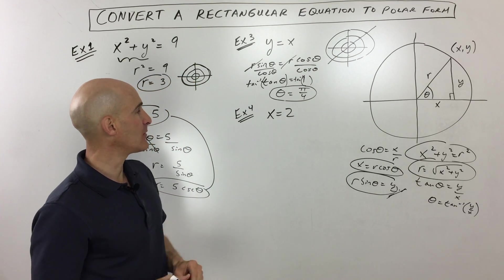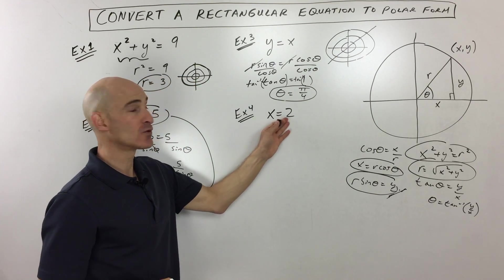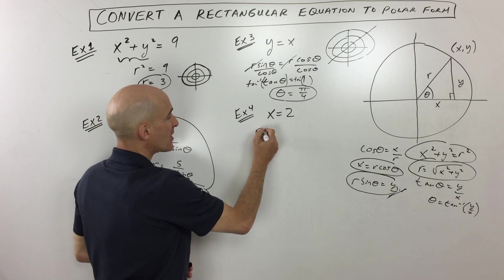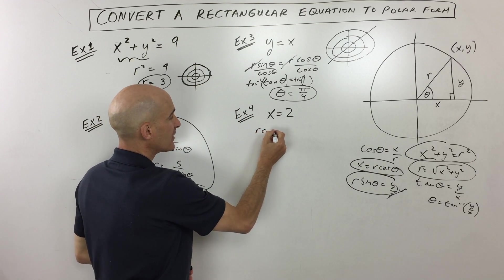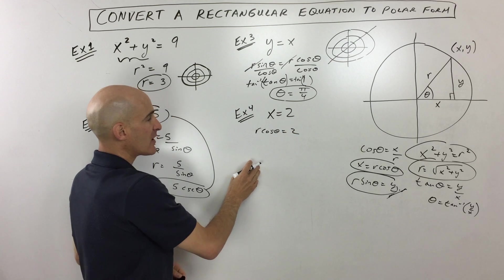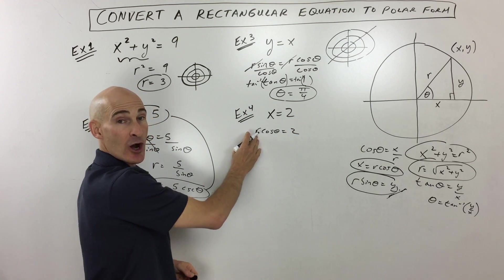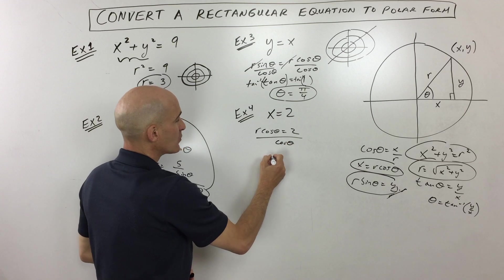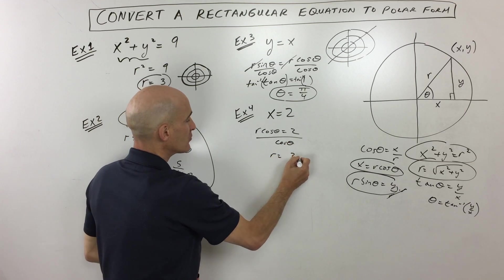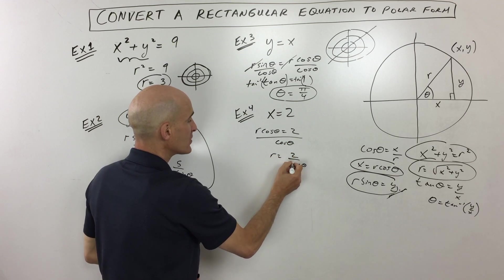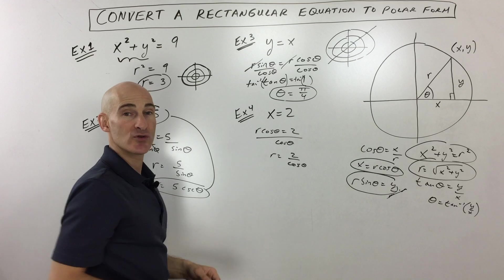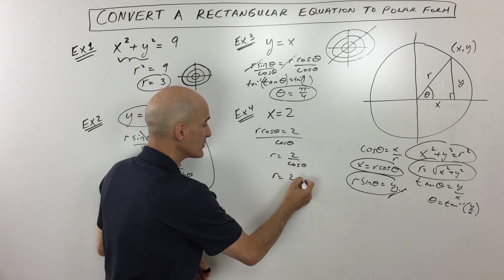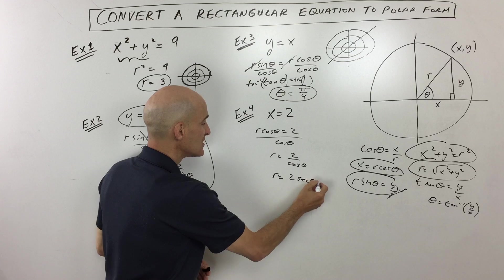Example four: x equals two. We replace x with r cosine theta, then isolate r by dividing both sides by cosine theta, giving r equals two over cosine theta. Since the reciprocal of cosine is secant, we get r equals two secant theta.